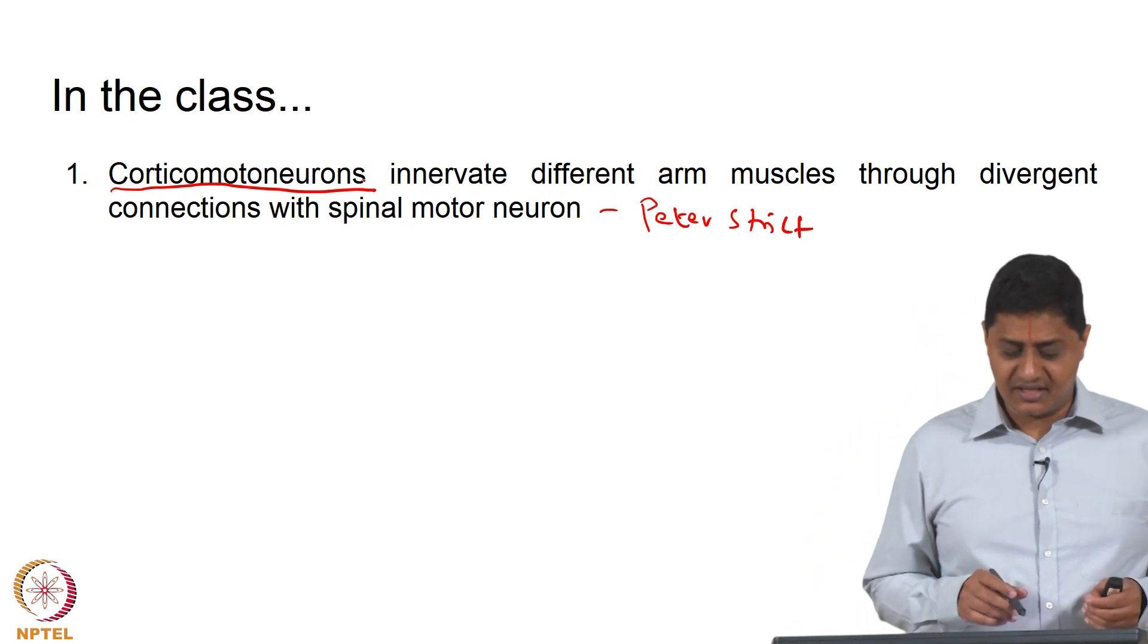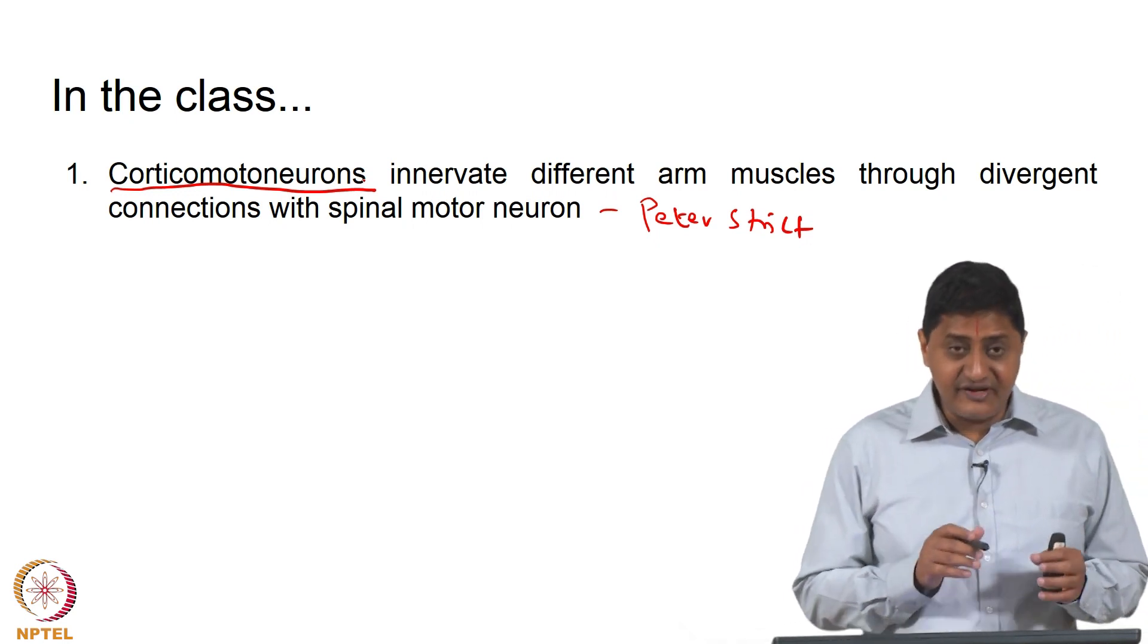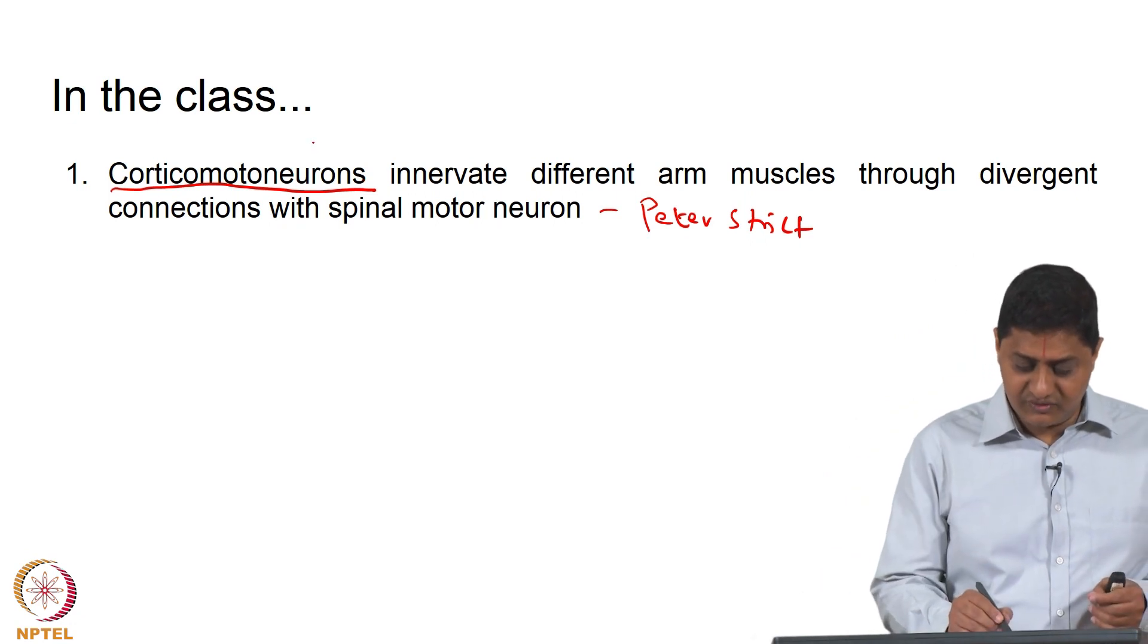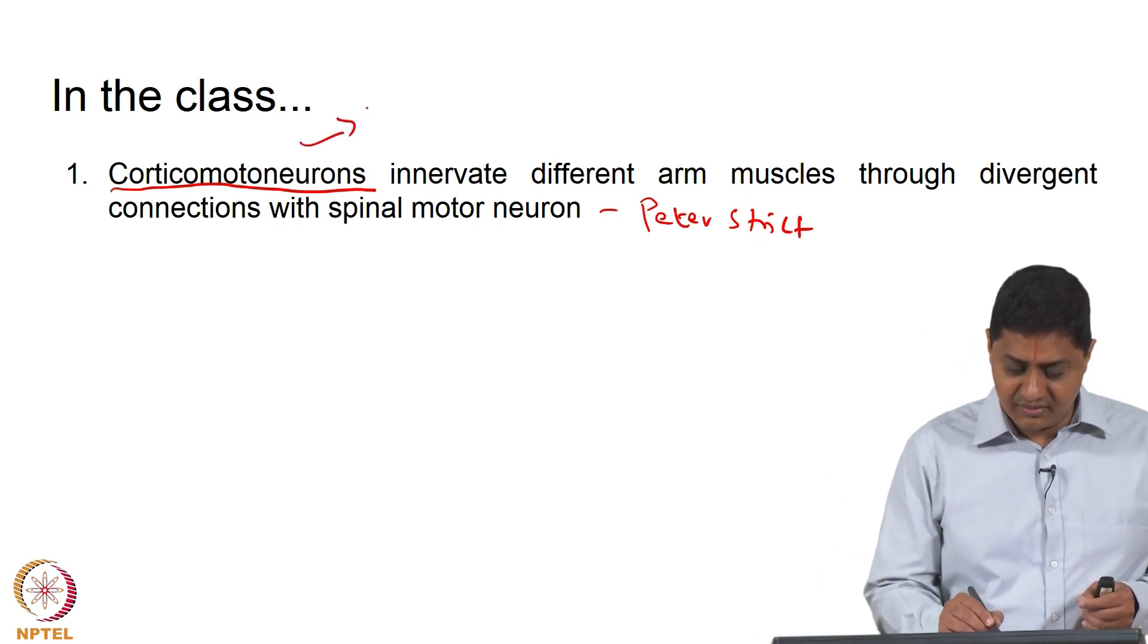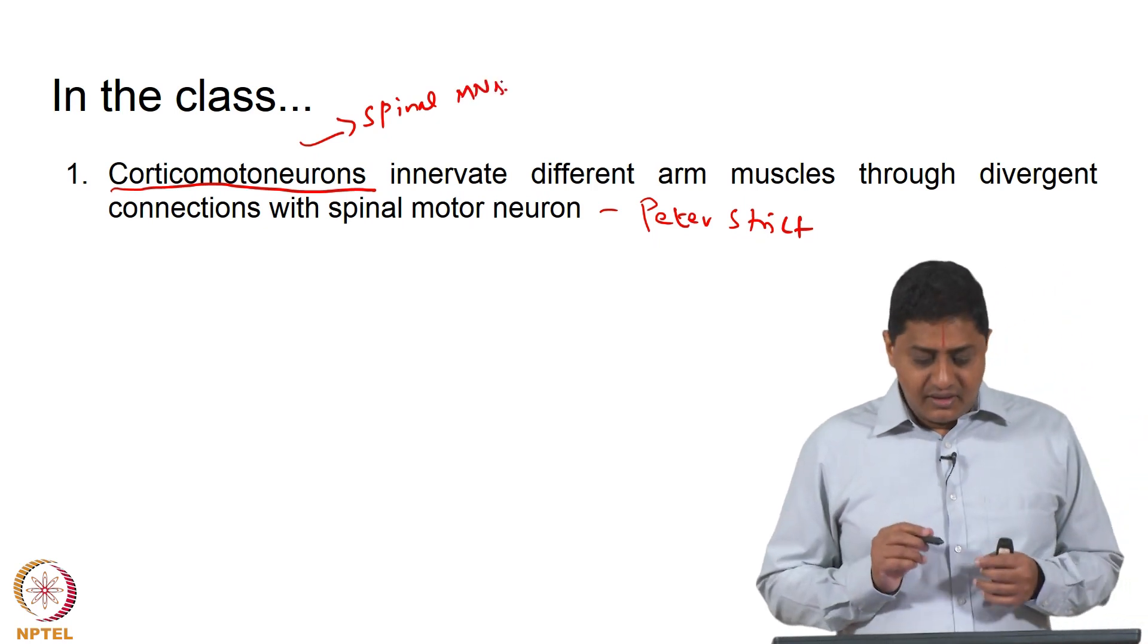These are also called upper motor neurons. There is going to be a discussion later, but let us at least define this. Corticomotor neurons are those that have connections with motor neurons of the spinal cord or the spinal motor neurons.